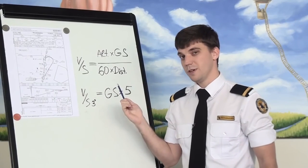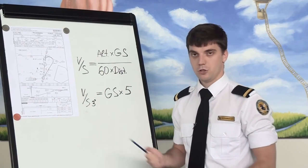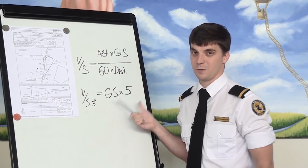Does it look scary for you? Well, there is a rule of thumb for a normal 3 degrees glide slope. Just multiply your ground speed by 5 and you will get your vertical speed required.